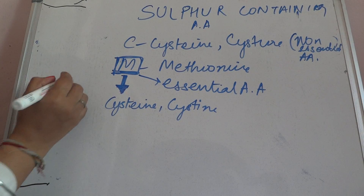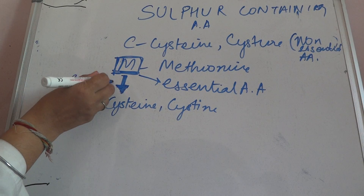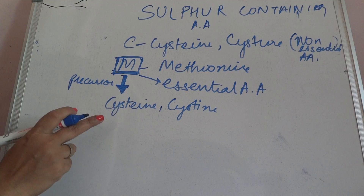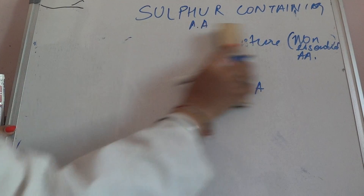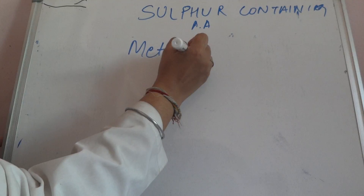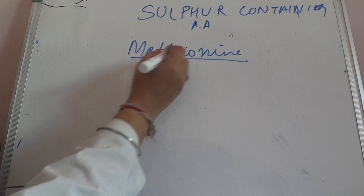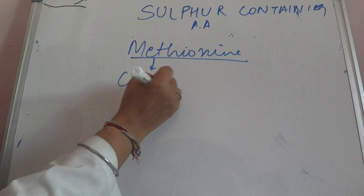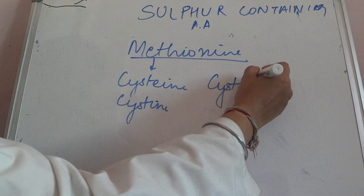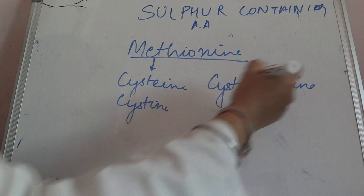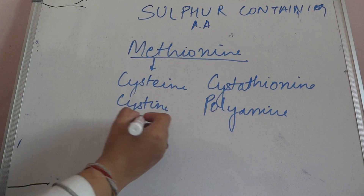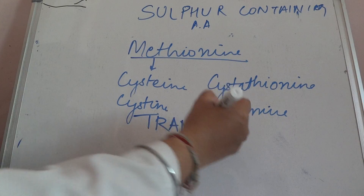Methionine is a precursor of cysteine and cystine. Methionine is an essential sulfur-containing amino acid and it is a precursor of cysteine, cystine, cystathionine, polyamines, and it is most important in transmethylation.